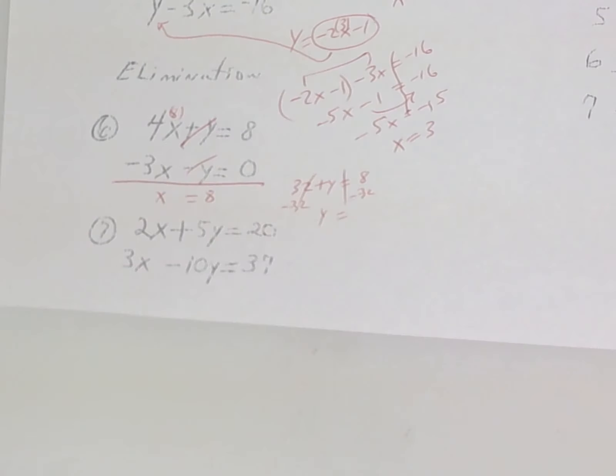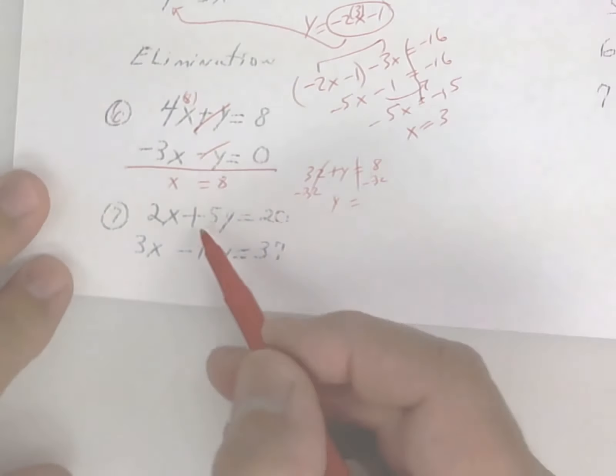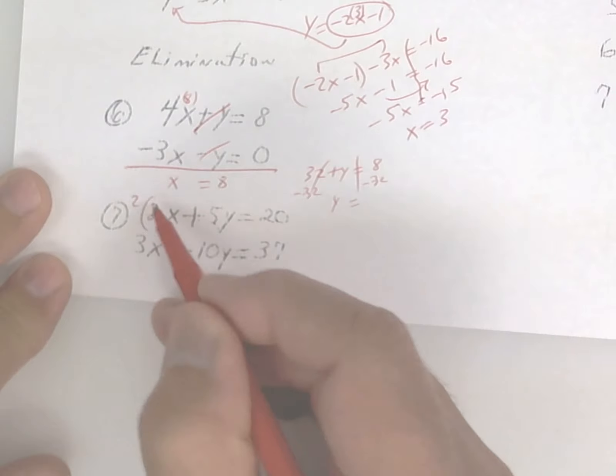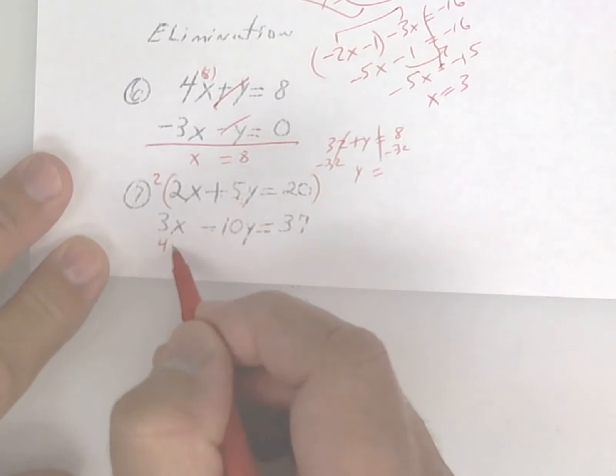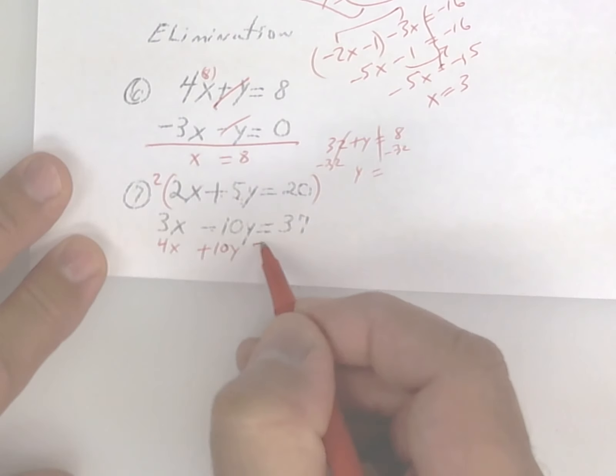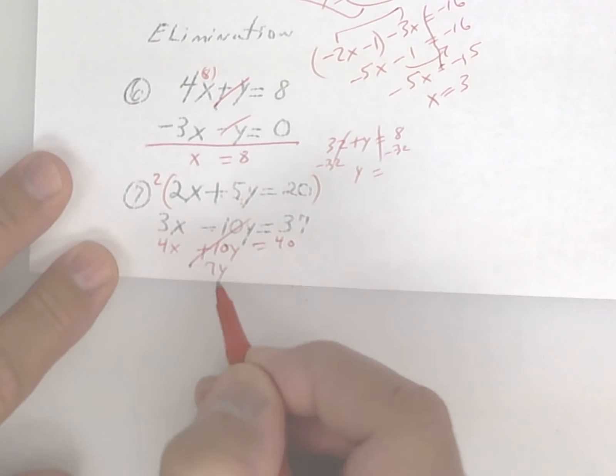Okay, finally, the last one. Since this is a plus and a minus, and this is a 5, I would multiply it by 2 to get a 10. So down here, 2 times 2 is 4x, plus 10y is equal to 40. This cancels, so I get 7y is equal to 77.